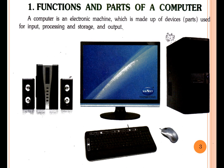A computer is an electronic machine which is made up of devices — means parts used for input, processing, storage, and output. Here's your definition of a computer. It's simple: a computer is an electronic machine.